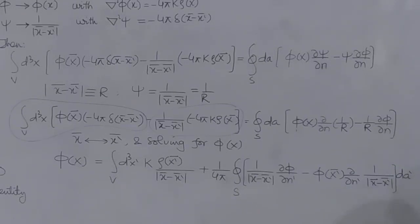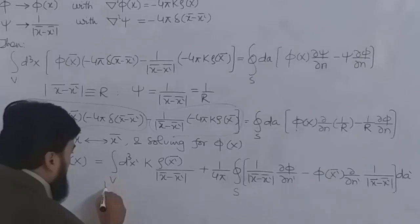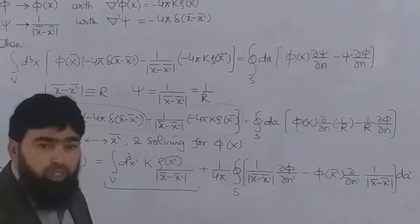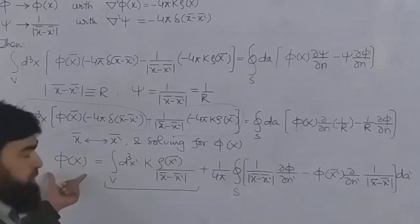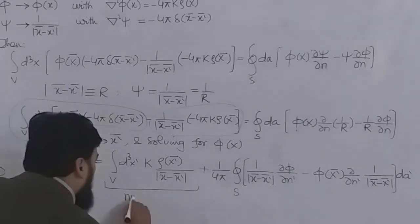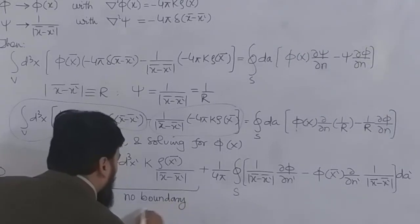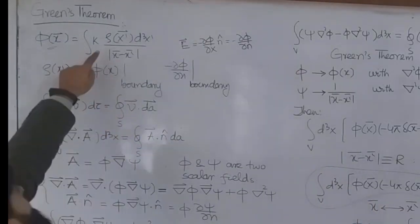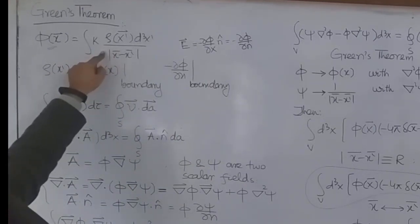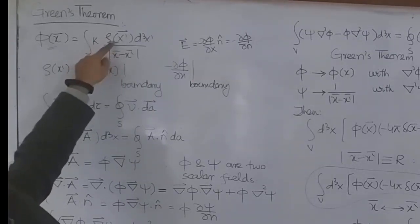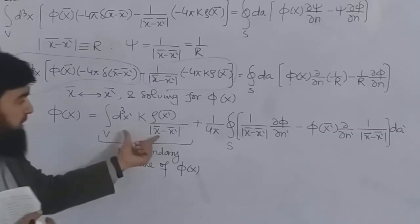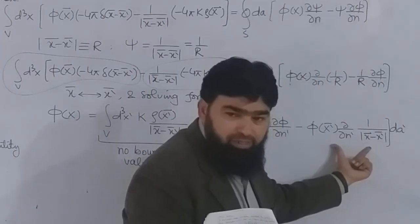φ(x) is quite an incredible result. The first part — k ρ(x')/|x − x'| integrated over the volume — is the term we derived at the very beginning for the potential. This term requires no boundary conditions because ρ(x) is already given to us, so this part we already know.